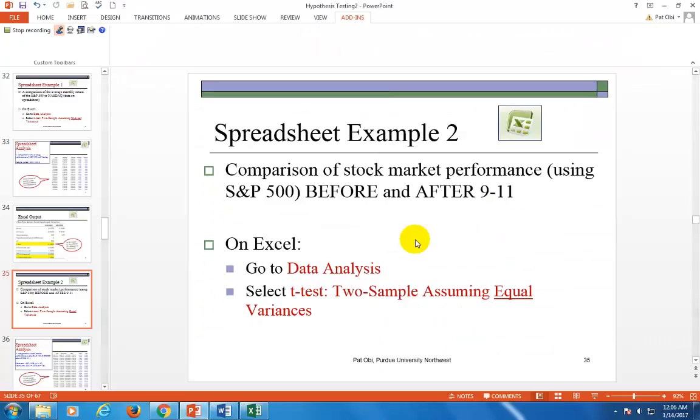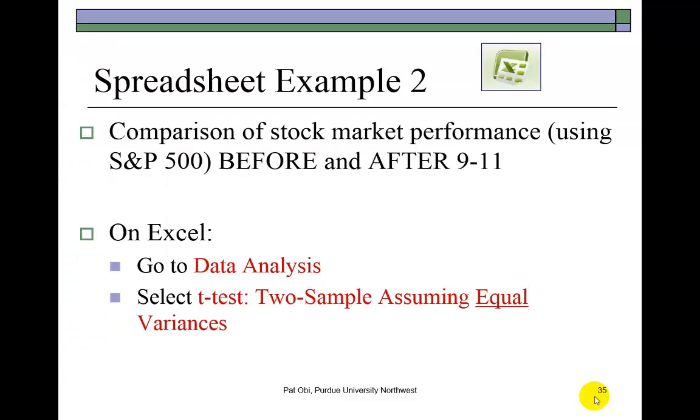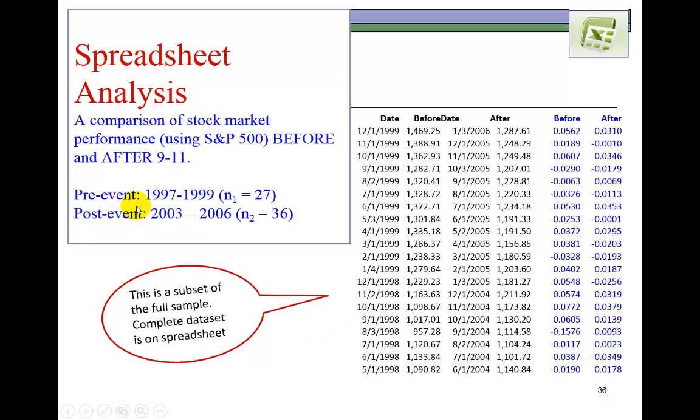It's right over here on the spreadsheet. My pre-event period is summarized here. There are 27 observations of monthly data, and post-event is 36 observations. The sample sizes need not be the same when comparing the means of two independent populations.